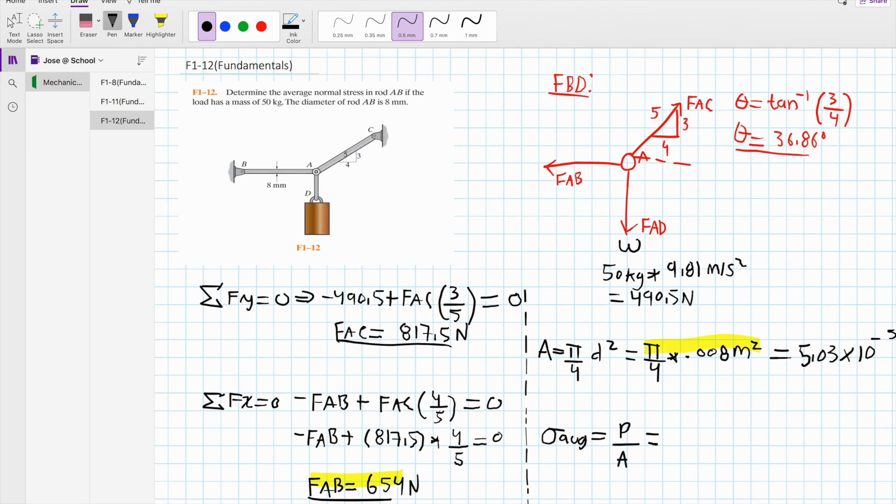Now, simply substitute these two numbers, this one and FAB, into the equation. For the force, we have 654 newtons divided by your area, 5.03 times 10 to the negative 5, and we get 13.0 megapascals as your final answer.